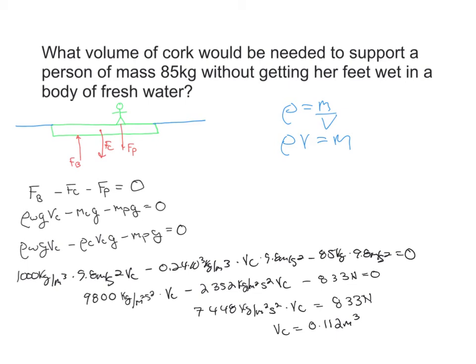Now I have only one unknown — the volume of the cork. Plugging in values: the density of water is 1000 kilograms per meter cubed, times 9.8 meters per second squared, times the unknown volume. The density of cork is 0.2 times 10³ kilograms per meter cubed — found in the table linked in Brightspace — times the volume of cork, times 9.8 meters per second squared, minus the mass of the person, 85 kilograms, times 9.8 meters per second squared.